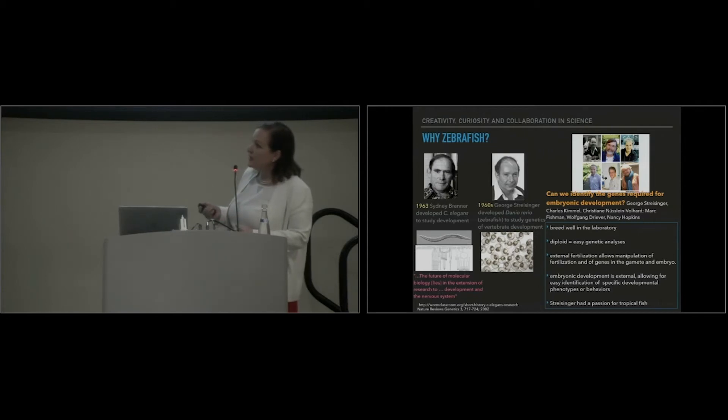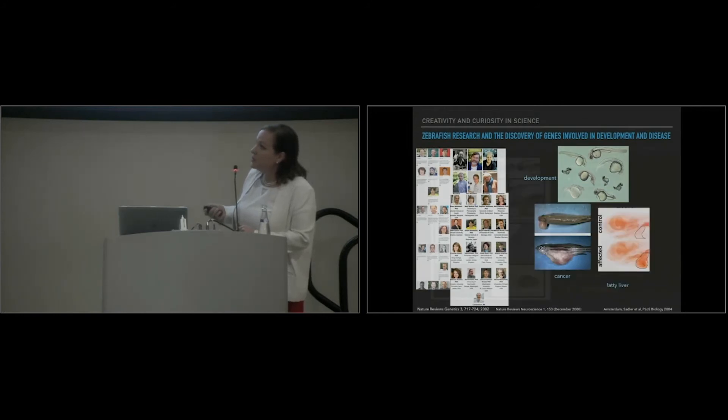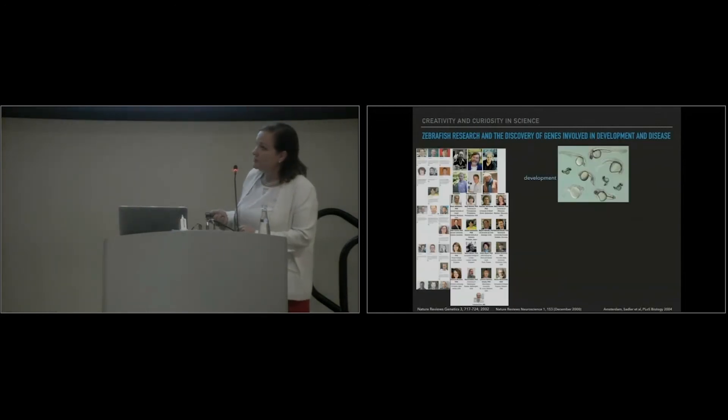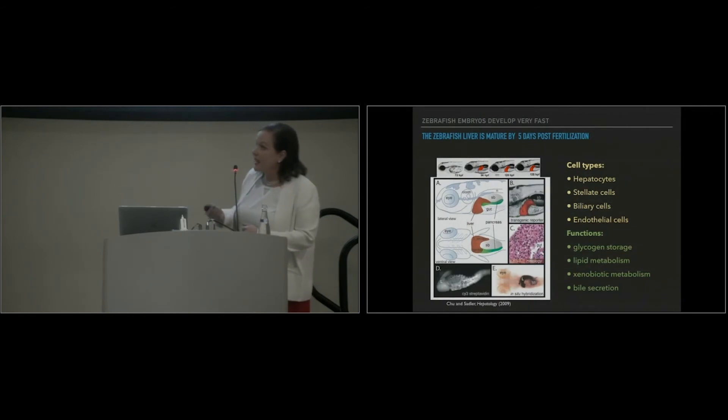External development was really important because if you're studying development and you want to see what goes wrong, it's nice to be able to watch those embryos. Finally, Streisinger had a passion for tropical fish, so that took him to the fish store often. He really started working on this alongside other scientists who took this system along with him and said, can we now use this to identify genes that are important for development? With this creative and pioneering approach, he launched a field that's now hundreds of investigators all over the world who study development and mutants that have defects in development, who study cancer, liver disease, anxiety, sleep, cardiovascular disease, congenital disease, and many other disorders. From this beginning in the 1960s, this field has really exploded.